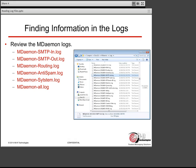Then we have the SMTP Out log, which contains a list of all outbound SMTP connections. When a user sends an outbound message, that message is first sent to the inbound queue via SMTP In, and then MDAMON performs an MX record lookup on the receiving domain, places the message in the remote queue, and creates an outbound SMTP connection to the receiving mail server. Those outbound sessions are reflected in the SMTP Out log file. Then we have the MDAMON routing log, which can be used to trace inbound and outbound messages through the queues on their way to their destination.